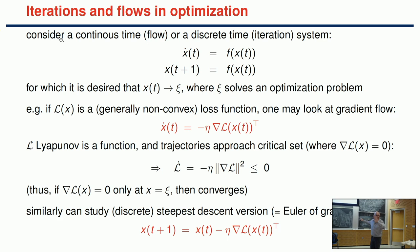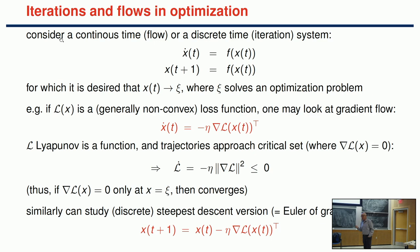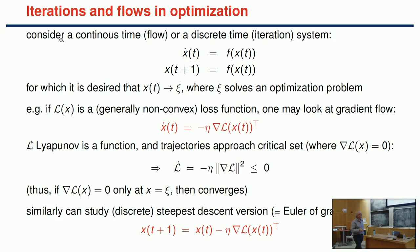If we use the gradient flow x-dot = -η ∇L and look at L as a Lyapunov function, the derivative of L with respect to time is the gradient of L dotted with x-dot, giving -η times the norm squared of the gradient. By LaSalle's invariance principle, you converge to the set of points where the gradient is zero. Taking the Euler approximation of the flow gives standard steepest descent.